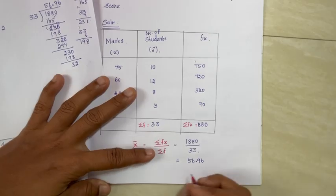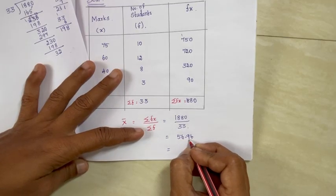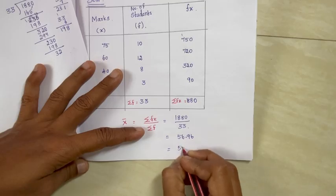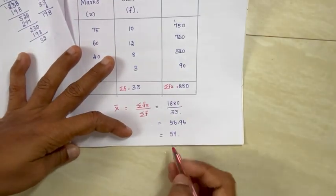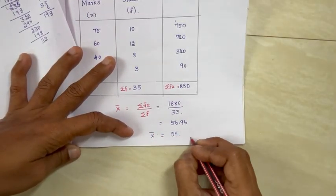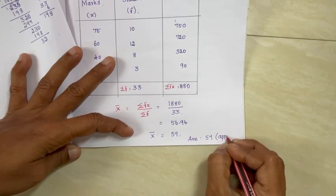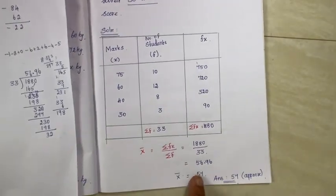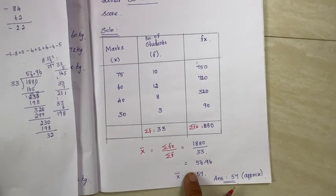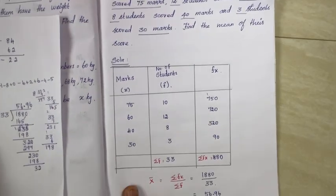Since 56.96 repeats, rounding: the digit after the decimal is 9, which is 5 or above, so we round up to 57. The mean of the scores is approximately 57. x-bar is approximately 57. Next, the fourth question.